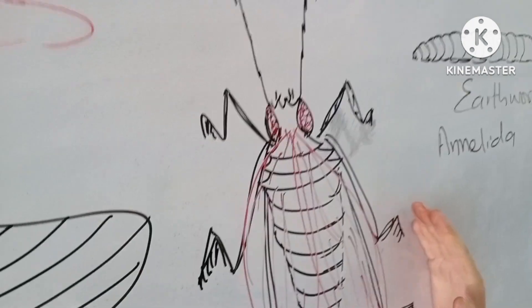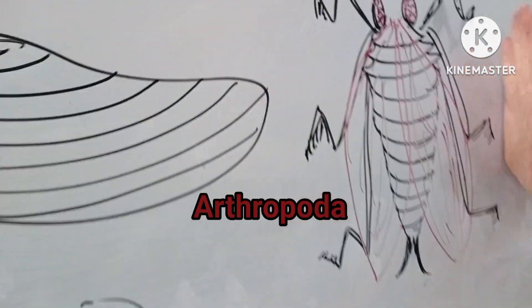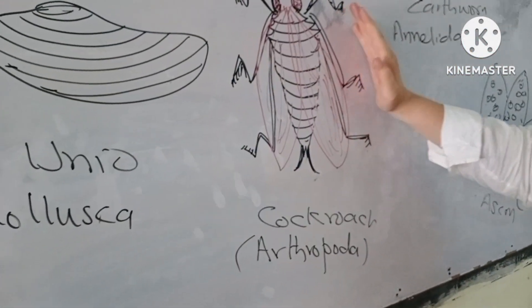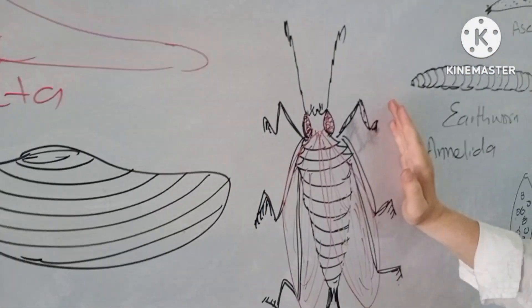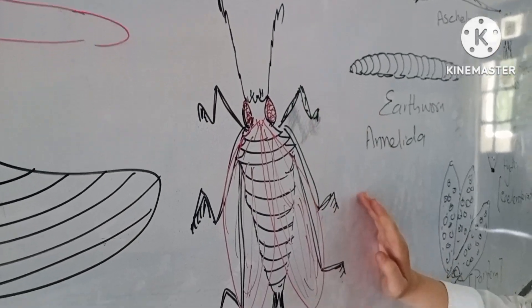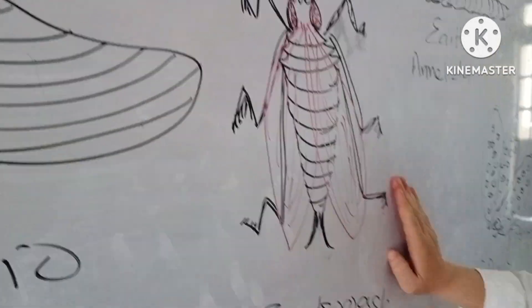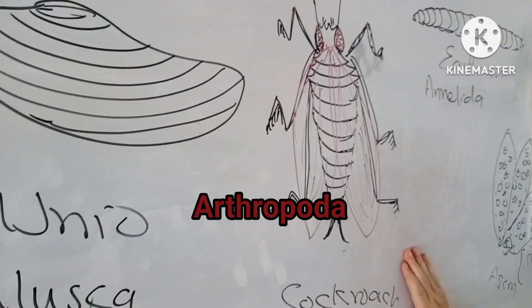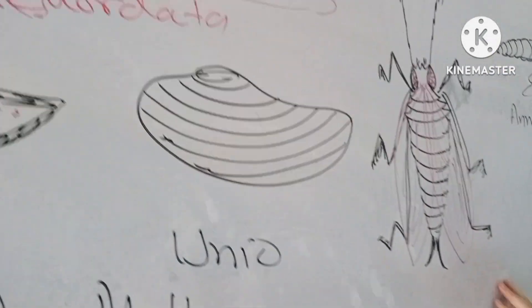This is cockroach, and it is the most important specimen in both first year and second year from the MCAT point of view. It belongs to phylum Arthropoda.